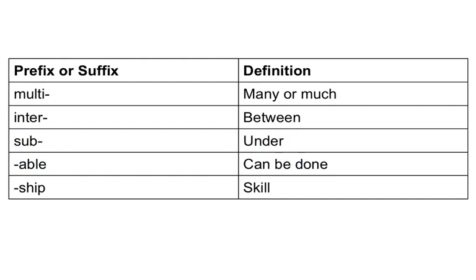The suffix able means that it can be done, and the suffix ship means that it's a skill or quality.